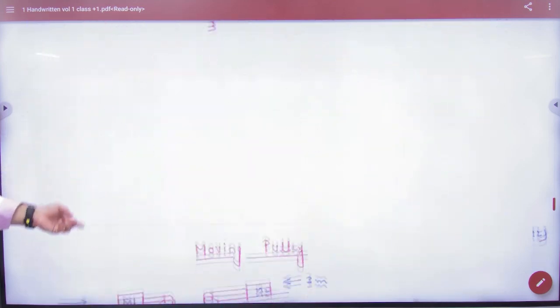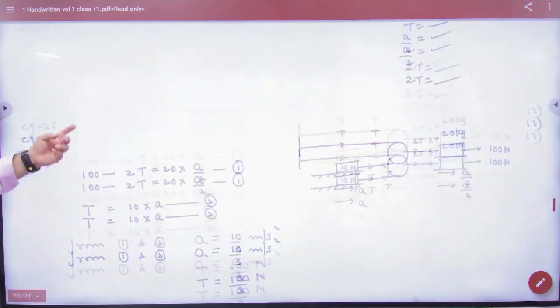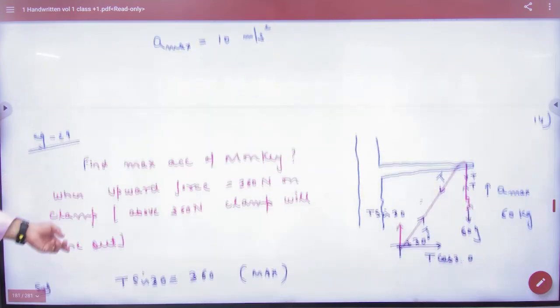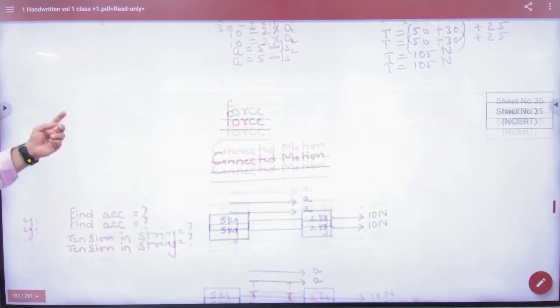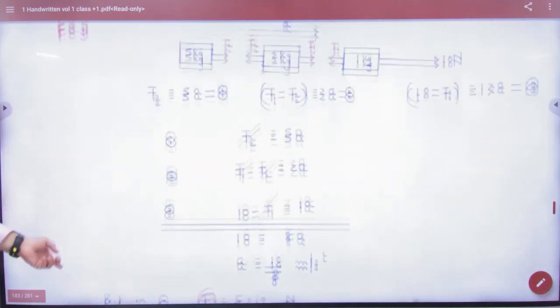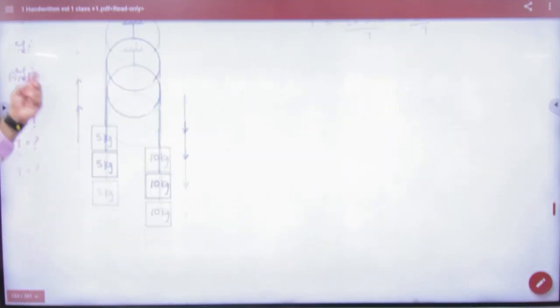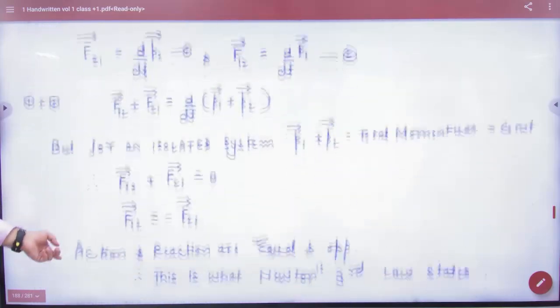Next is, in the booklet, we had a moving pulley. This we had done. Connected motion, we had done. So this we had done. Real motion.